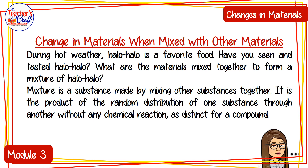Now let us look at changes in materials when mixed with other materials. Halo-halo is a favorite food. Have you seen and tasted halo-halo? What are the materials mixed together to form a mixture of halo-halo? A mixture is a substance made by mixing other substances together. It is the product of the random distribution of one substance through another without any chemical reaction, as distinct from a compound.